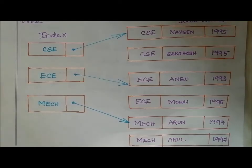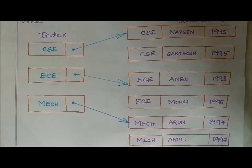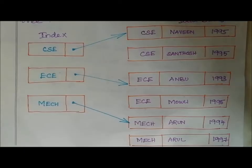Let's see the example for sparse index. In sparse index, index records appear only for a few records. We create index for only a few records and the index record is not created for every search key. In dense index, index records are created for every search key, but in sparse index, index records are not created for every search key — they appear only for a few records.